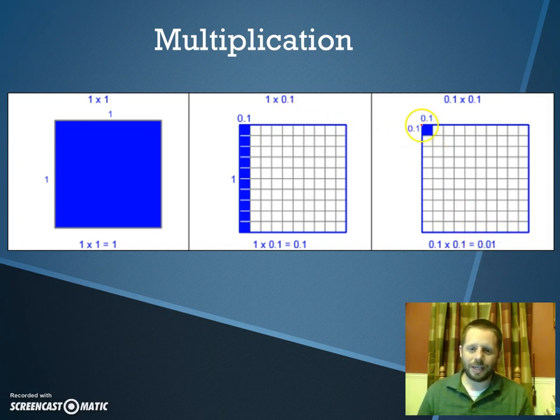You can also figure out that each side length is 0.1 by the fact that it takes 10 of these longs—this blue shaded part represents a long in the base 10 blocks. It takes 10 of those longs side by side to make up a flat. If the flat's representing the whole number 1, then each long would represent a tenth. So that's another way to figure out that each of these little pieces, each little segment, is worth 1 tenth.